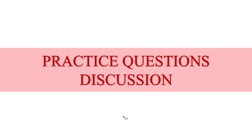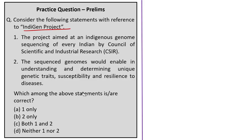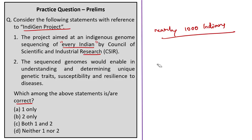Now let's see some practice questions based on today's analysis. The first question is about the IndiGen project with two statements. Statement 1: the project is aimed at indigenous genome sequencing of every Indian by CSIR. This appears correct but the phrase 'every Indian' is wrong — the project sequenced the genomes of nearly 1,000 Indians from different regions. Statement 2: the sequenced genomes would enable understanding and determining unique genetic traits, susceptibility, and resilience to diseases. This statement is correct. The correct answer is option B — statement 2 only.